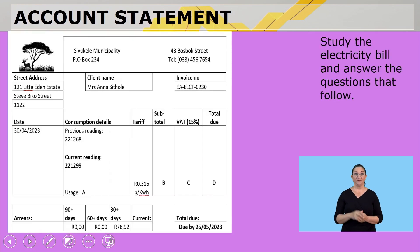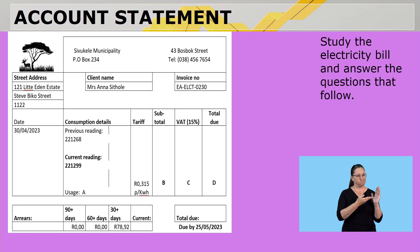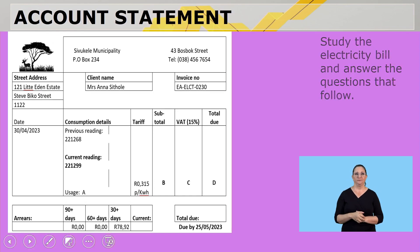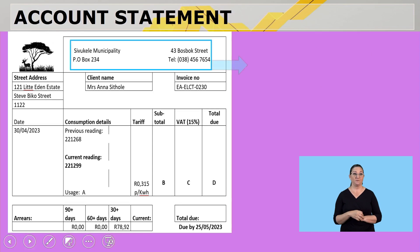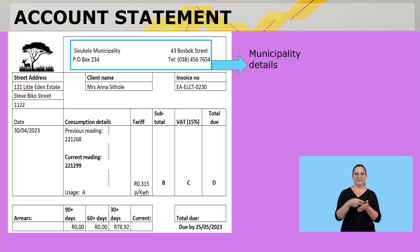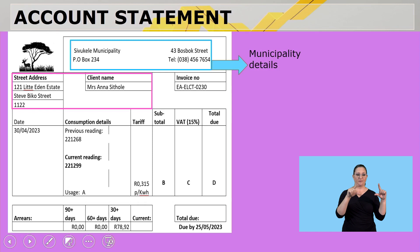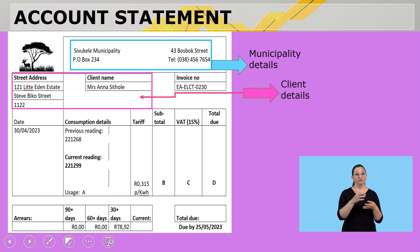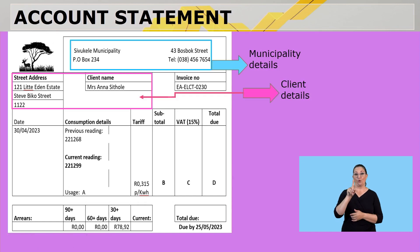Let's look at this account statement. This is an electricity bill and we will be looking at that and then answer the questions that follow. The blue highlighted section shows us the municipality details — Sivukele municipality at 43 Bosburg Street. The purple section shows the client details: Miss Anna Sitole, who stays at 1-2-1 Little Eden Estate, Steve Beaker Street.